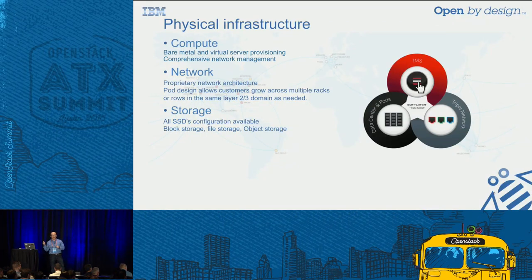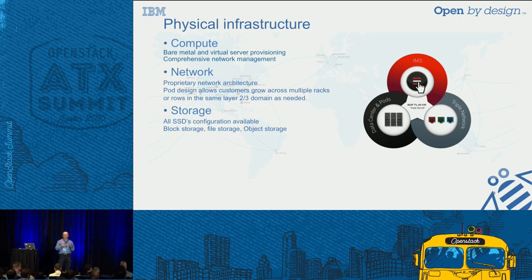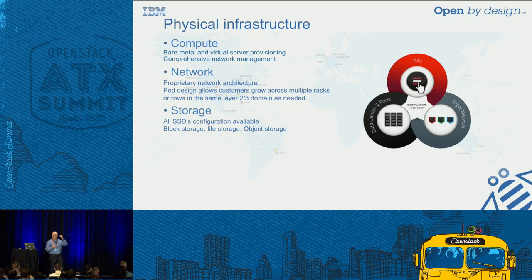About the building blocks available to us: you have three main points. First, compute — with SoftLayer's capabilities on bare metal servers. Once you get your account, you can provision bare metal servers in different flavors, sizes, and processors. You can have comprehensive out-of-band network management, which is really a key factor when deploying hypervisors that provide the foundation for the cloud.